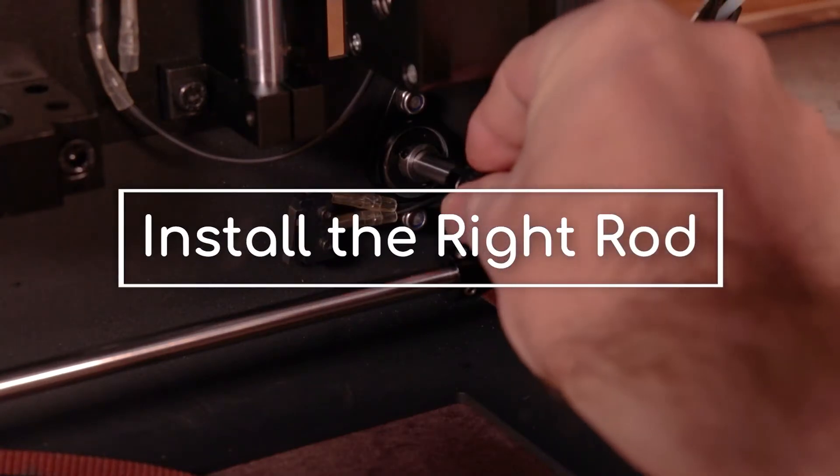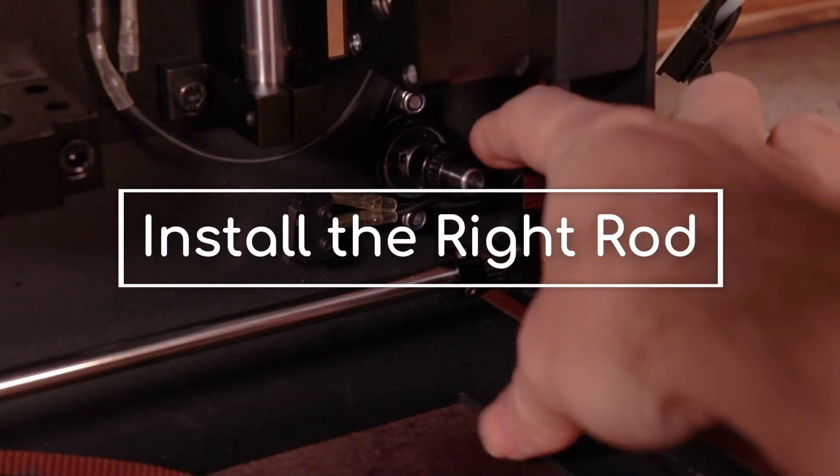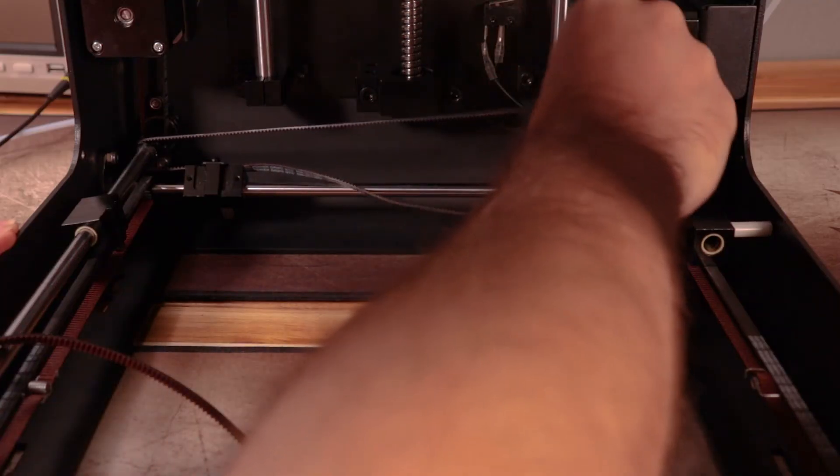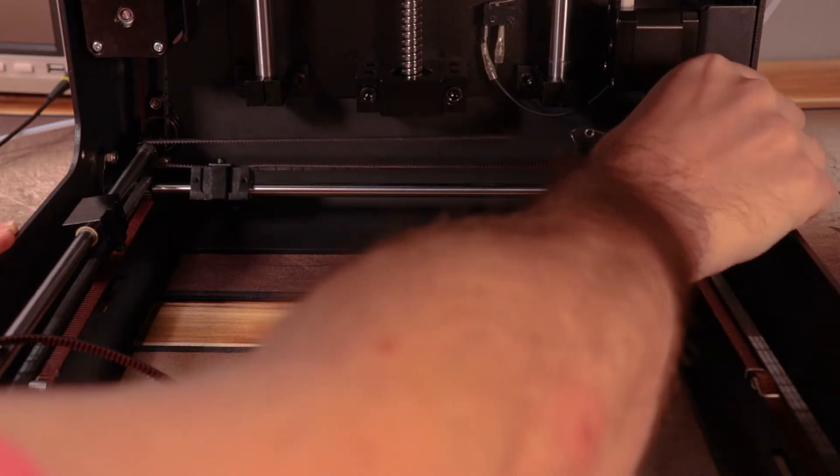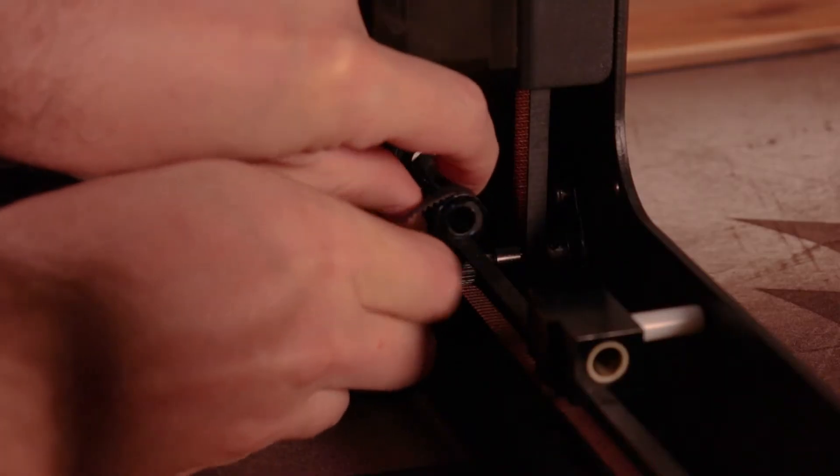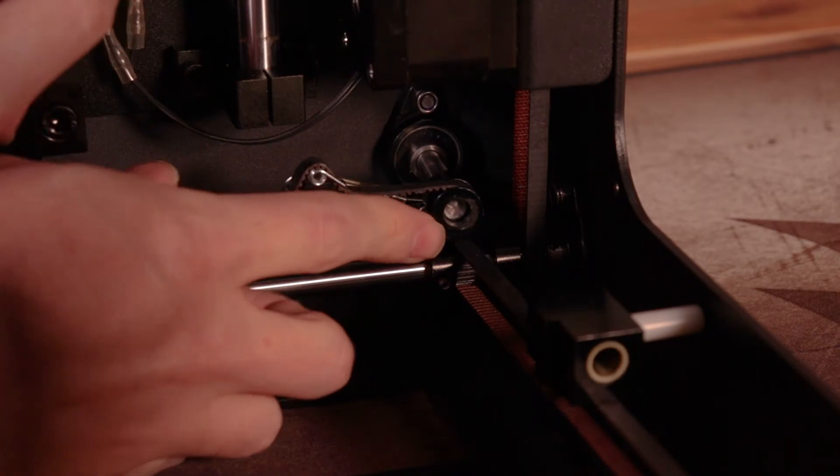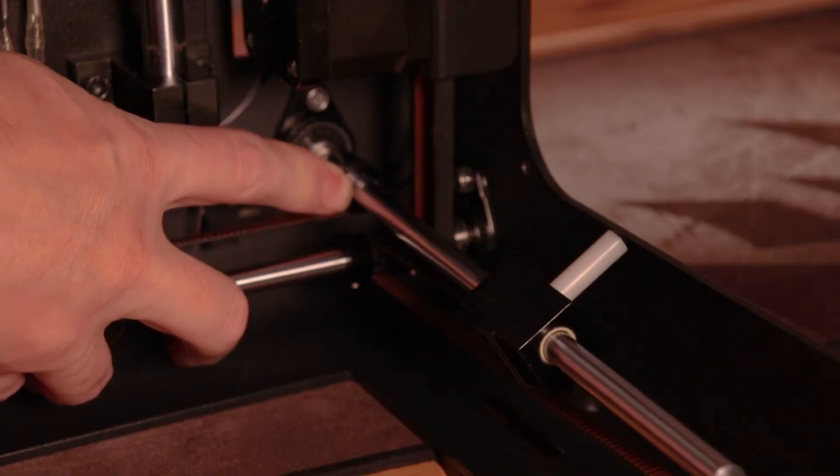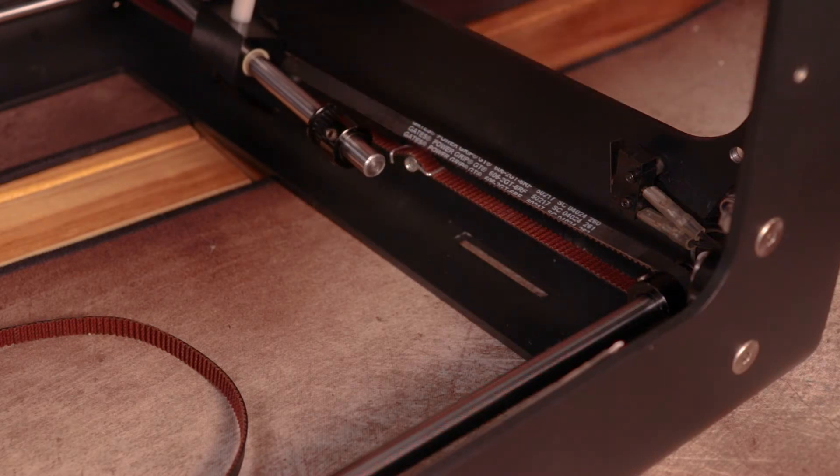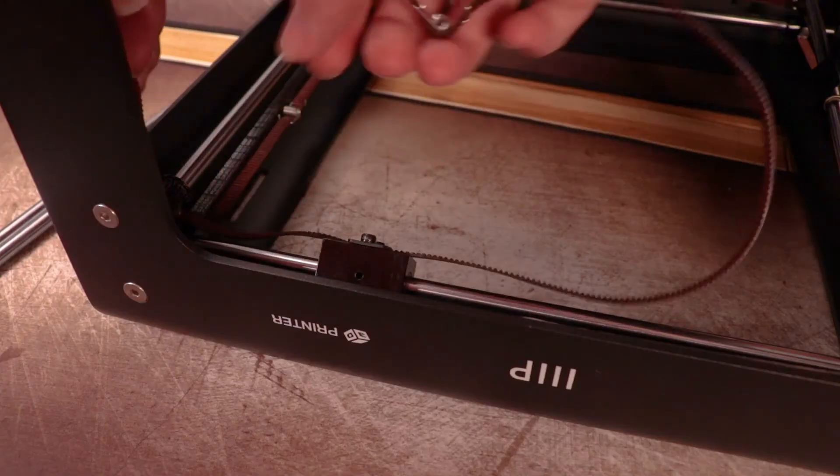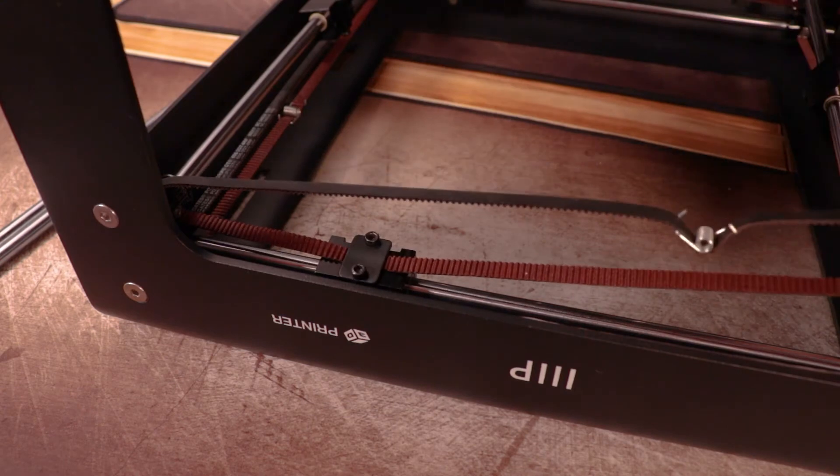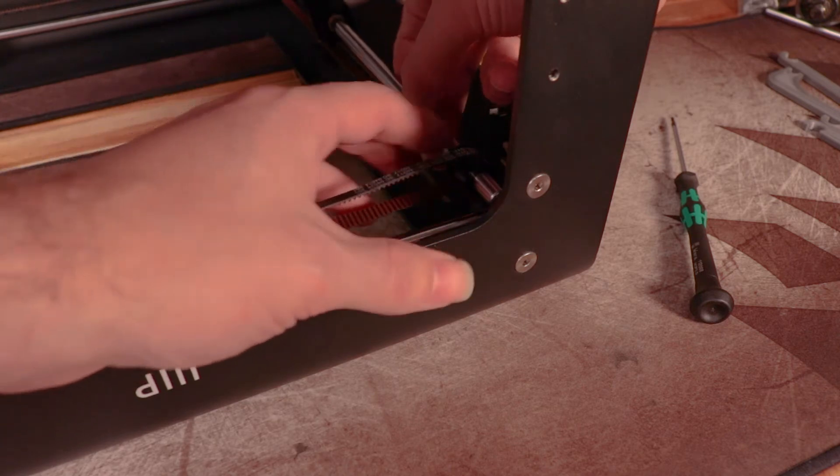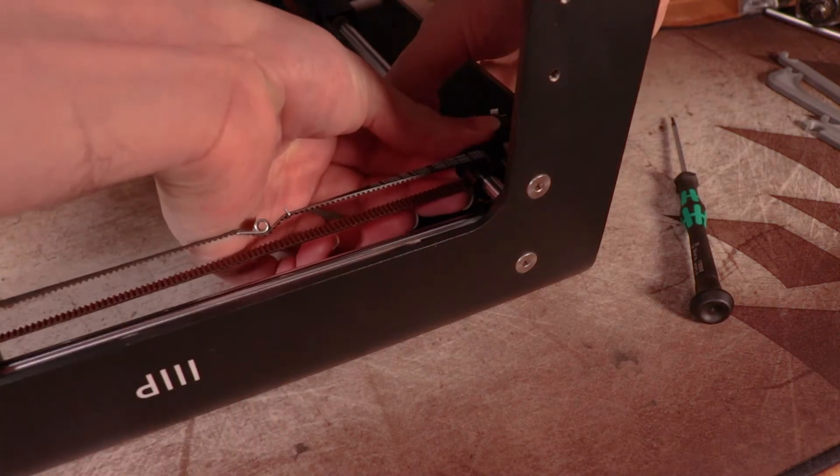And now the right side rod. Push it through and install the first pulley. Set the back belt into the pulley on the left side. Pull the belt tight and loop it onto the pulley on the right side. Push the rod through and install the right slide. Push it through some more and install the last pulley. Set the front belt onto the pulley on the left side. Pull the belt tight and loop it onto the pulley on the right side. Push the rod into the case and tighten the set screws.